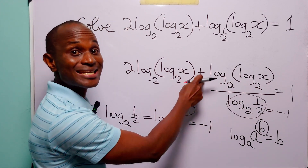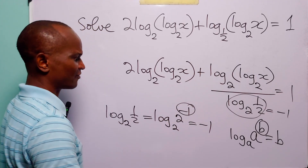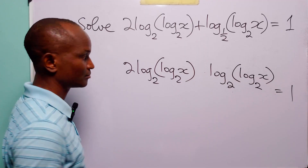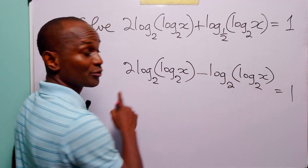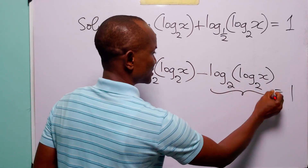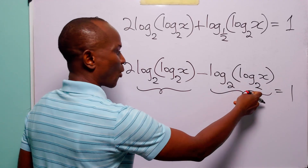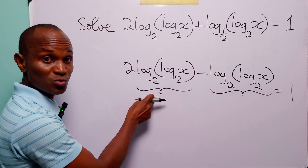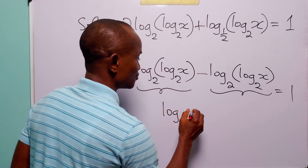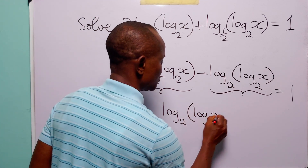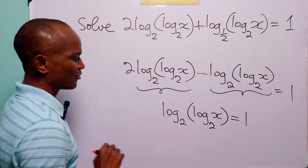Remember that when any quantity is divided by minus 1 it becomes negative, so ultimately this sign is going to change from positive to negative. Now when you look at this logarithmic equation, you will see that this quantity is exactly equal to this quantity, so when we subtract one of these from two of these, that is going to leave us with log base 2 of log base 2 of x, and this is equal to 1.